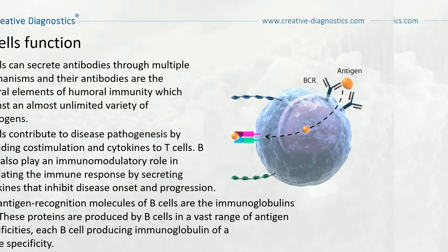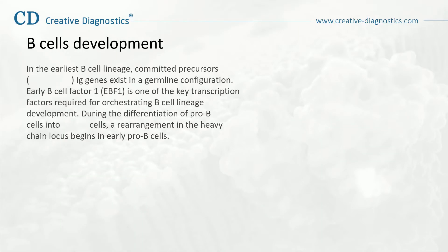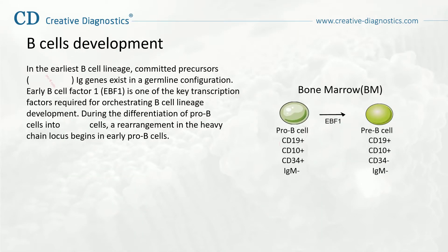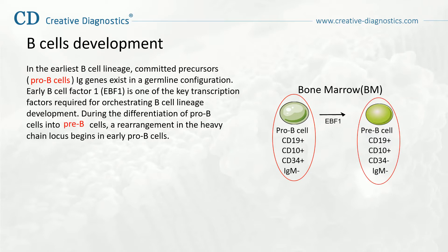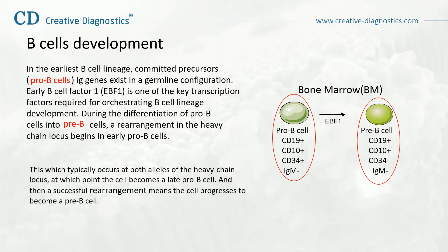In the earliest B-cell lineage, committed precursors — Pro B-cells — Ig genes exist in a germline configuration. Early B-cell factor 1 is one of the key transcription factors required for orchestrating B-cell lineage development. During the differentiation of Pro B-cells into Pre B-cells, a rearrangement in the heavy chain locus begins in early Pro B-cells. This typically occurs at both alleles of the heavy chain locus, at which point the cell becomes a late Pro B-cell, and then a successful rearrangement means the cell progresses to become a Pre B-cell.